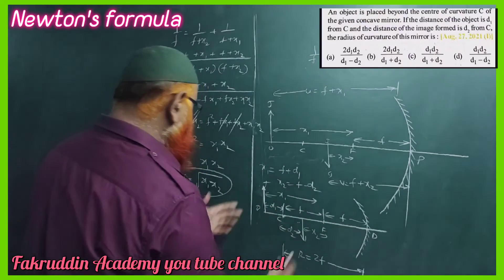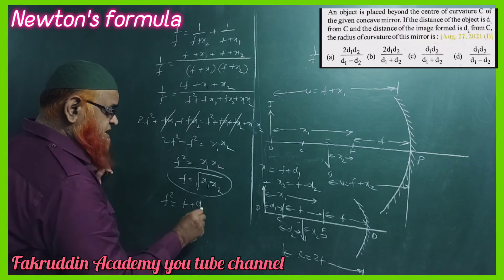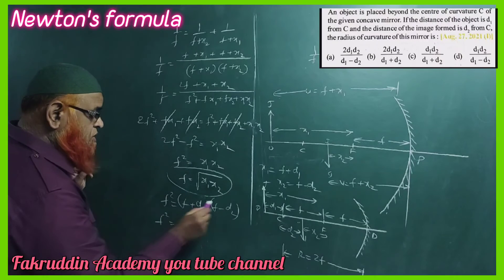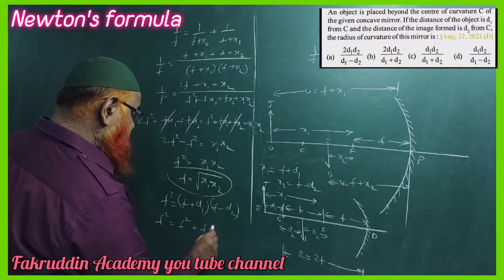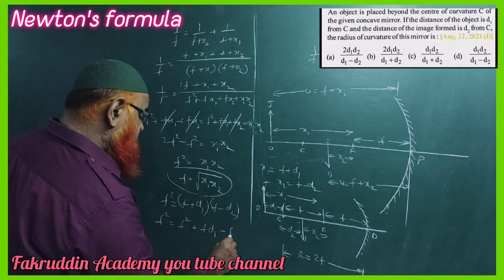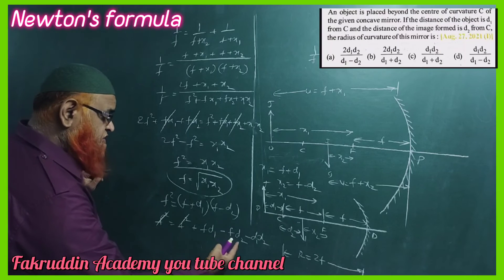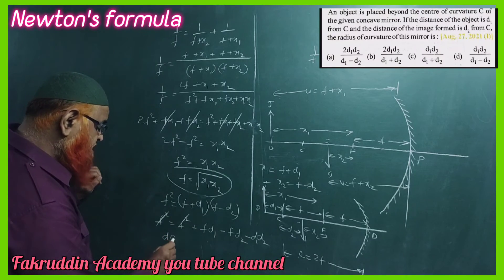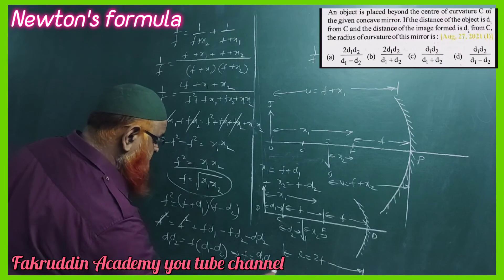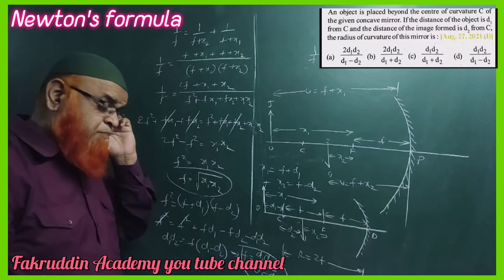Substituting into Newton's formula f² = x1·x2: f² = (f + d1)(f - d2) = f² + fd1 - fd2 - d1d2. The f² terms cancel, giving 0 = fd1 - fd2 - d1d2, so d1d2 = f(d1 - d2). Therefore, the focal length f = d1d2 / (d1 - d2).